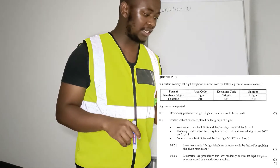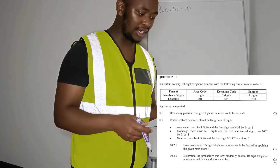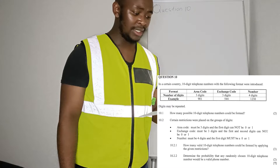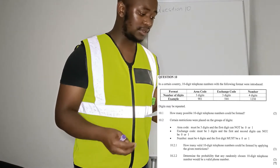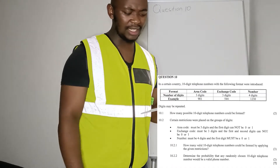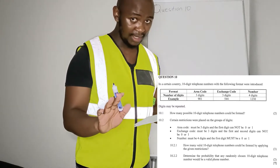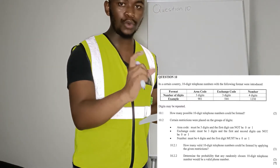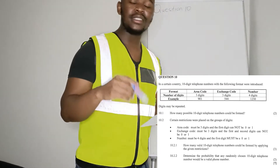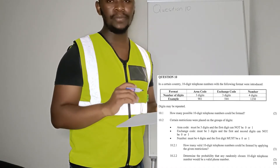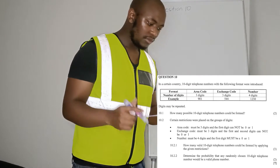I'm going to read it for you. Question 10 says that in a certain country there is a 10-digit telephone number configuration and it has the following format. We are given the format which shows the number of digits. There's an area code, an exchange code, and a number. The area code is three digits, exchange code three digits, and the number is four digits - all in all ten digits. They have different rules for each section and they are saying the digits may be repeated.